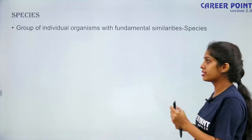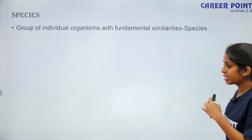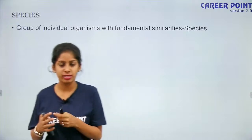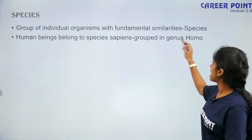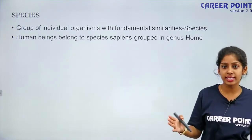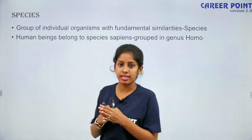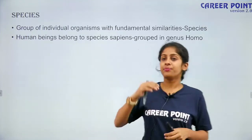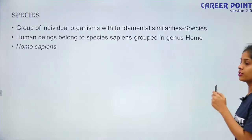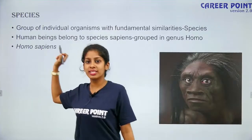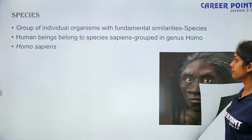First is species — the lowest or fundamental unit of classification. It is a group of individual organisms with fundamental morphological similarities. Human beings belong to the species sapiens, grouped in the genus Homo. Species inbreed among themselves — they are a group of individuals with a lot of similarities. In Homo sapiens, H is capital and s is small — that is how you write it.